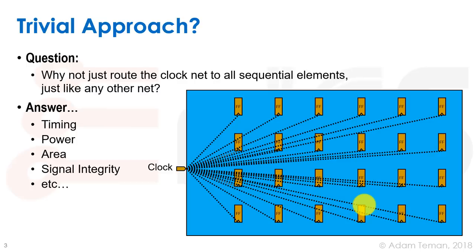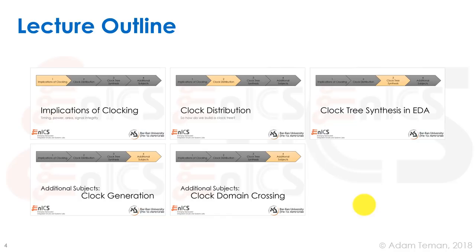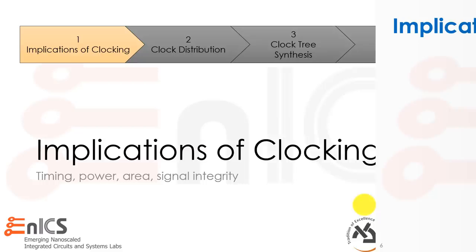The answer is multi-dimensional and has implications on timing, power, area, signal integrity, and other things. We'll go into those in the next slides. So we'll discuss the implications of clocking: timing, power, area, and signal integrity.